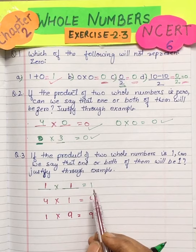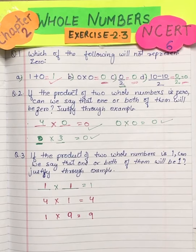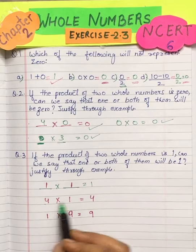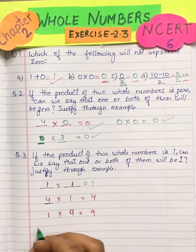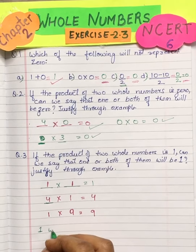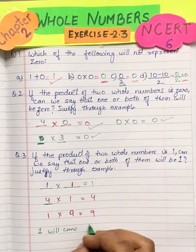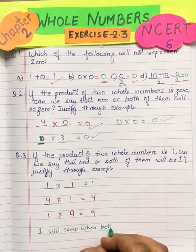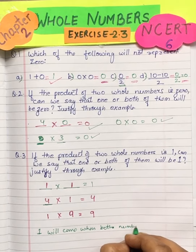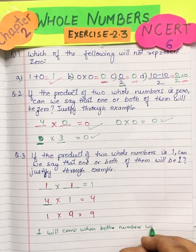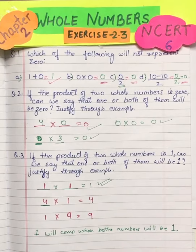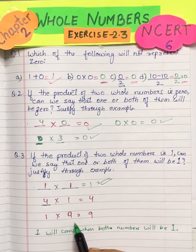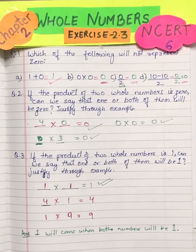So we get 1 only when both of them are 1. If one of them is different, then the answer will be that different number. So the answer is: 1 will come when both numbers will be 1, like in this case. We have proved this, and this is going to be the answer statement. Now we have done question number 3. Let's do question number 4.